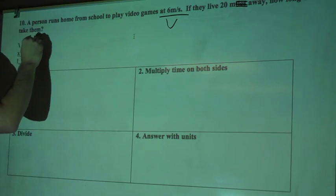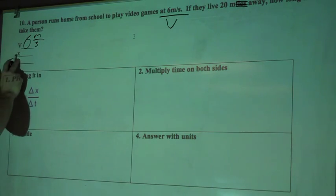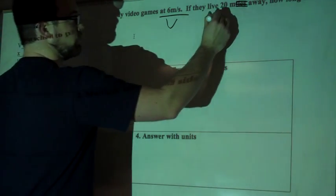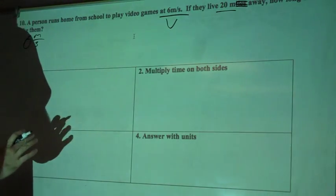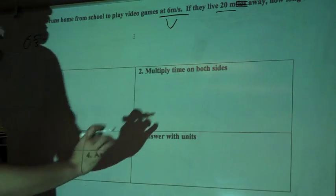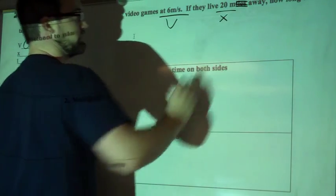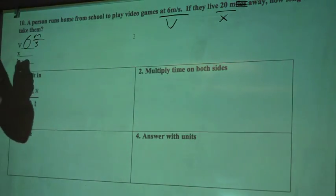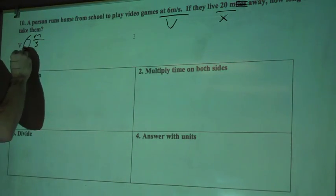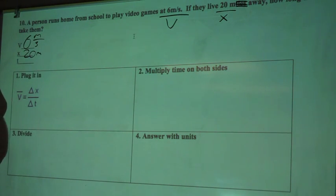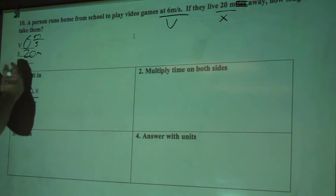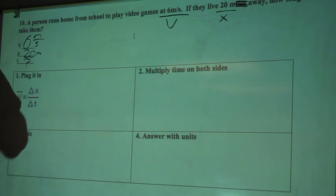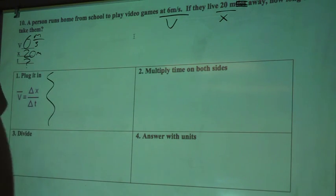And I'll rewrite that over here: 6 meters per second. X, or my distance, so they live 20 meters away. They must live like across the street or one house down or whatever. But that's going to be my X on my change in distance. So we'll write 20 meters right there. How long did it take them? Time? Don't know. I'm going to find it. I promise.